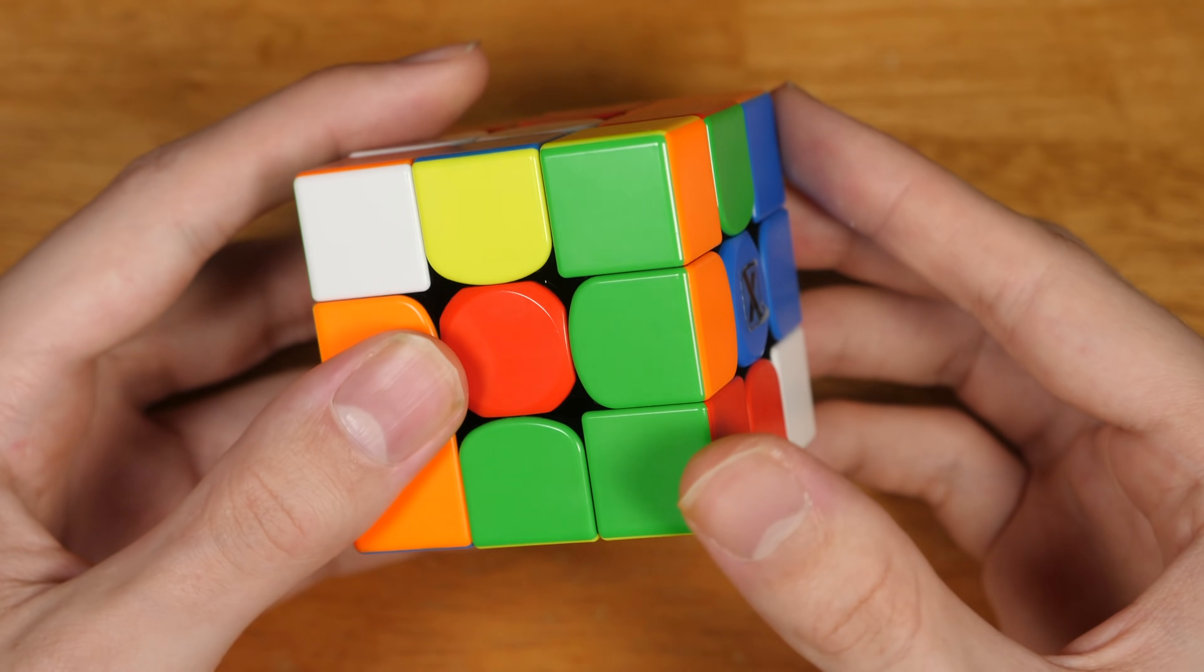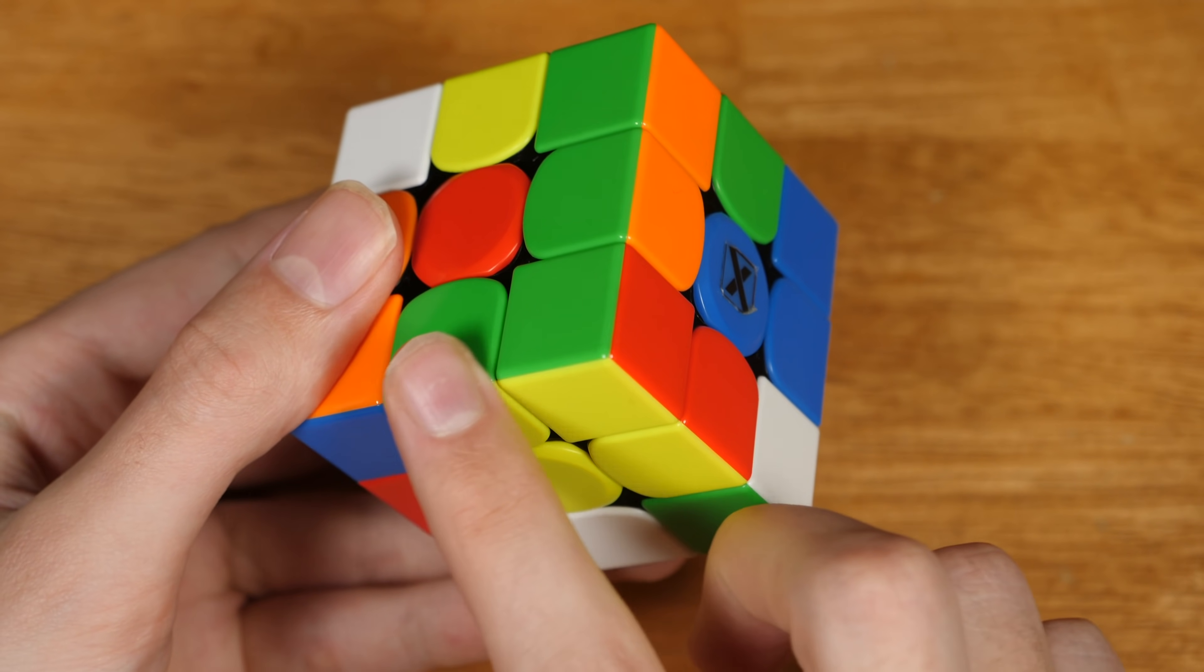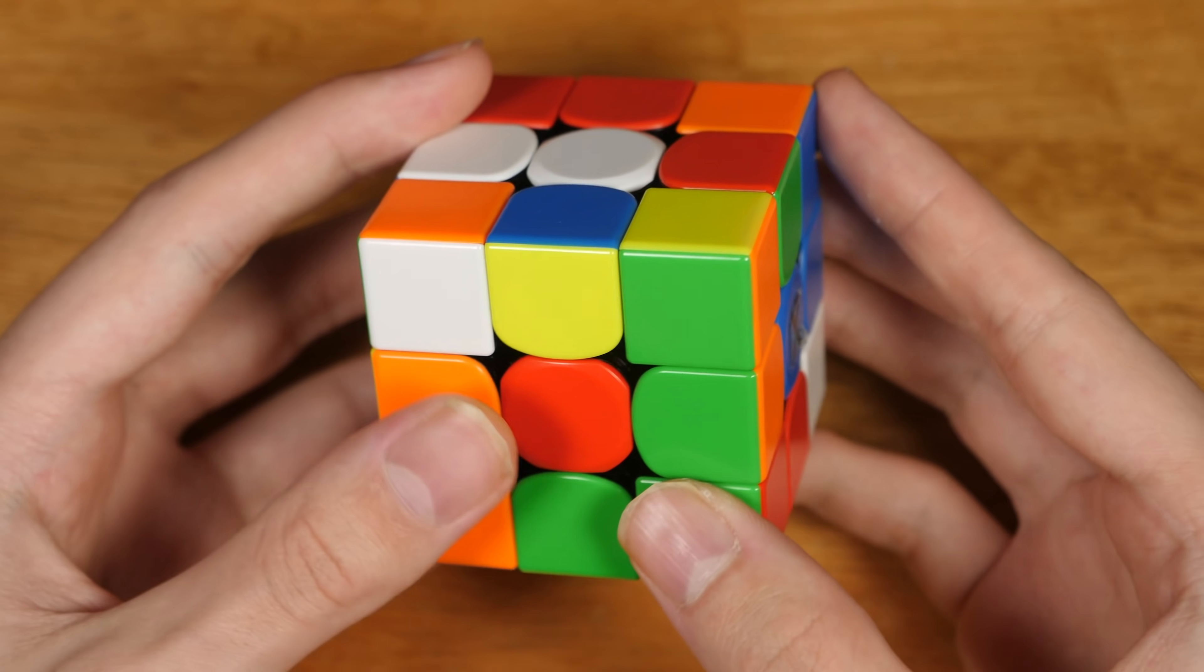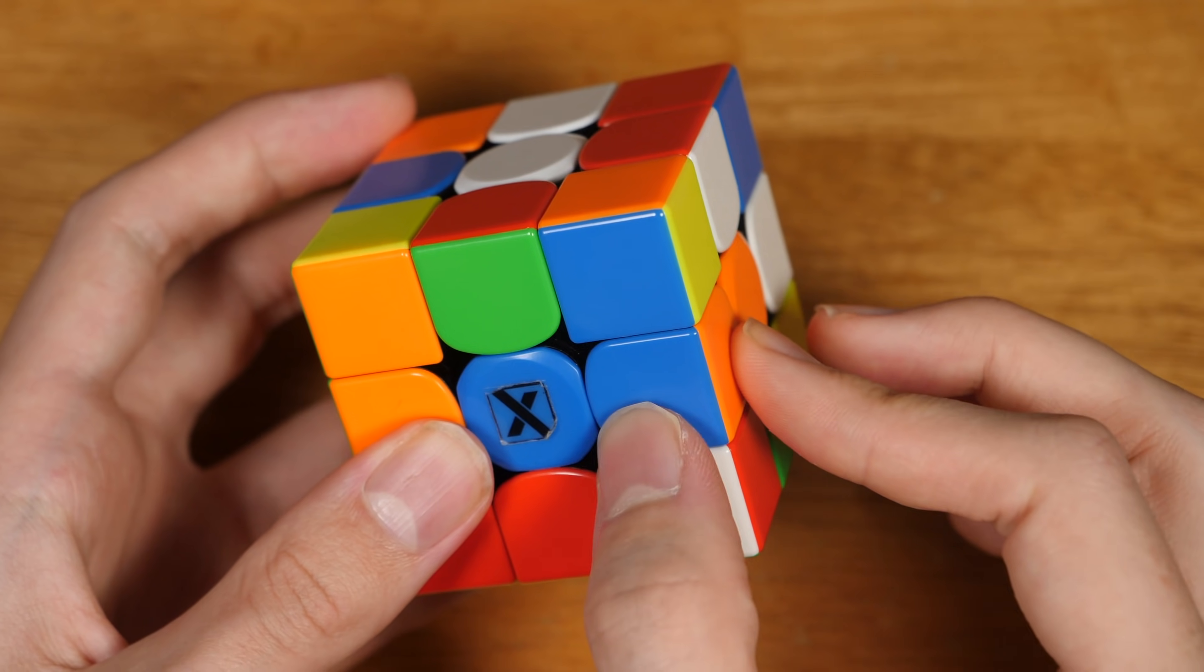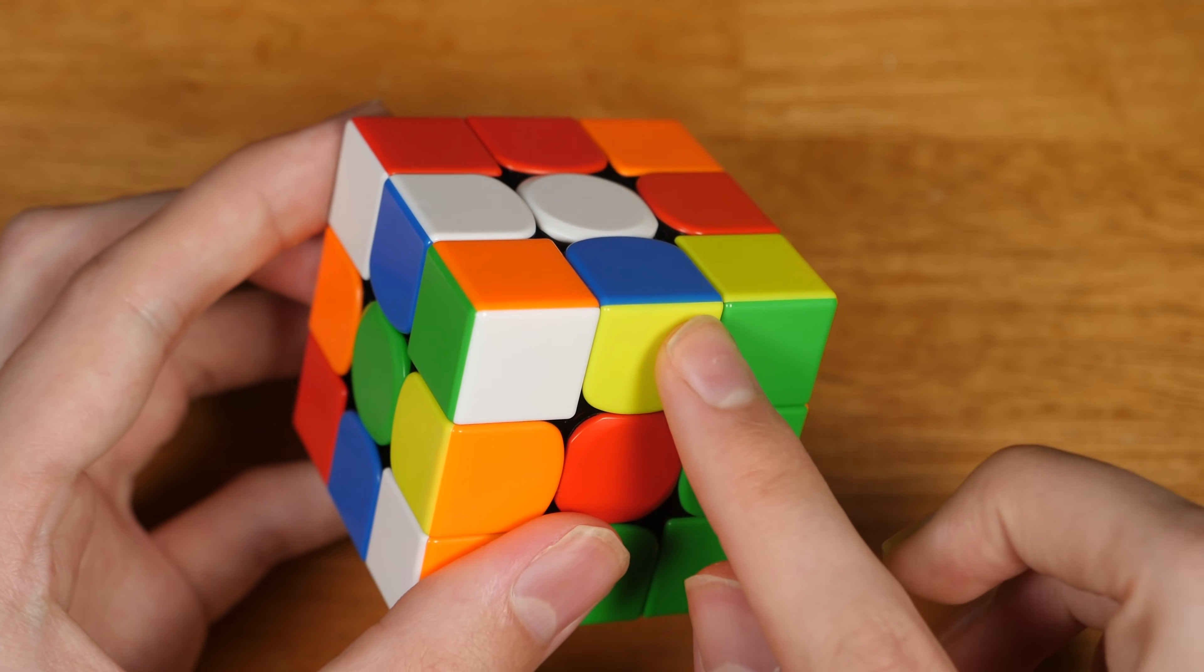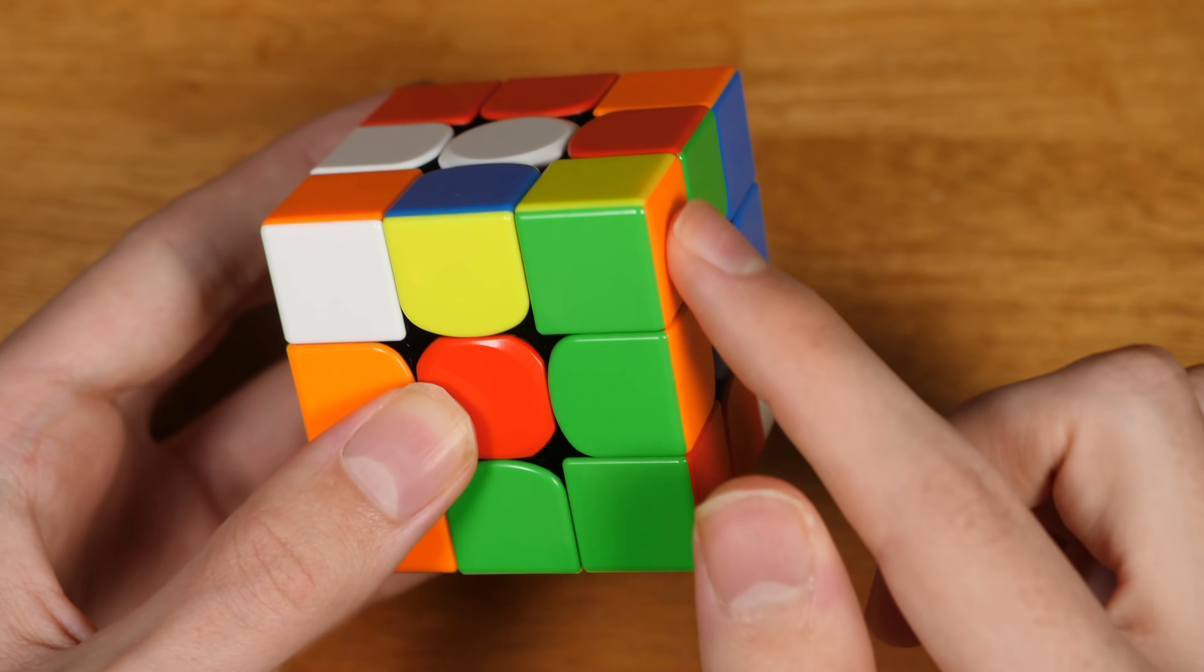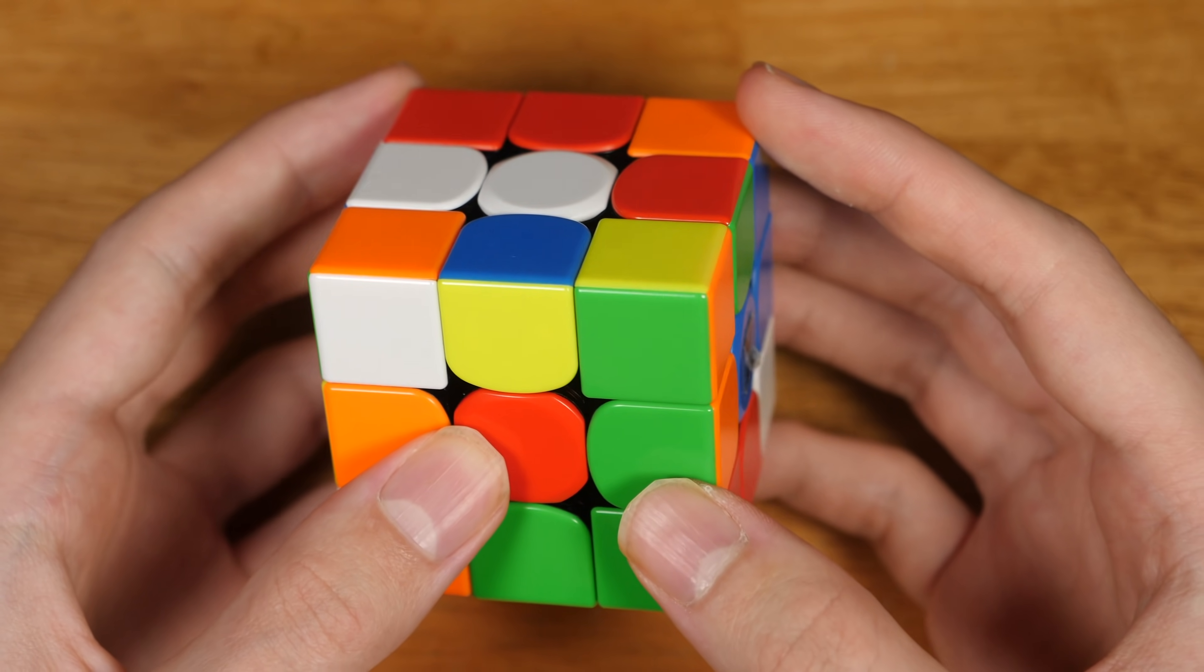Let's start with cross, which will be a double X cross on yellow, making use of this green-red-yellow block, this green-red edge, this pre-solved orange and blue edge along with this corner, and these two final cross pieces. We're also going to try and preserve this third green and orange pair.